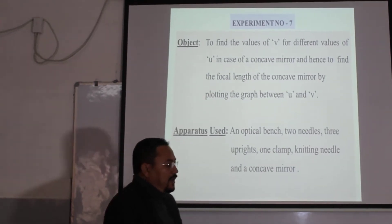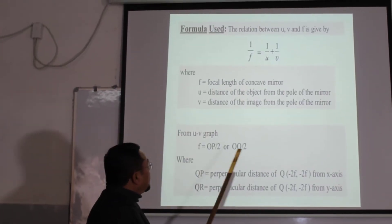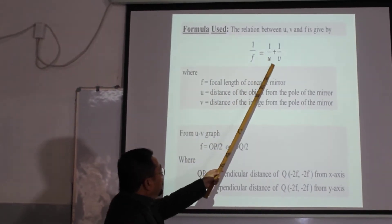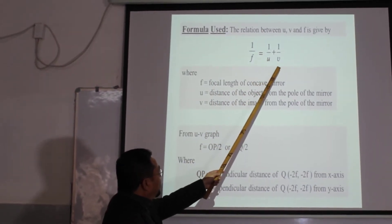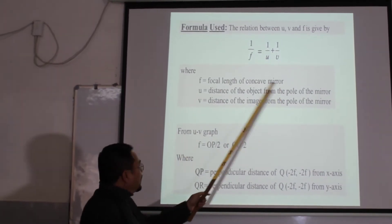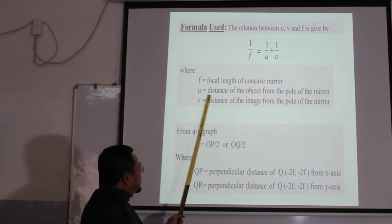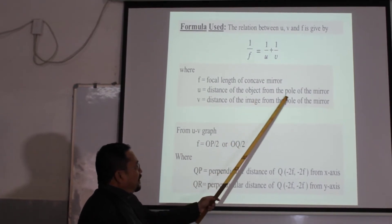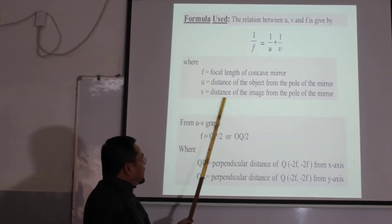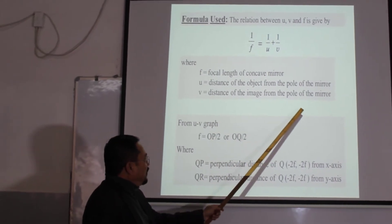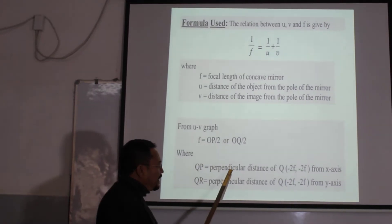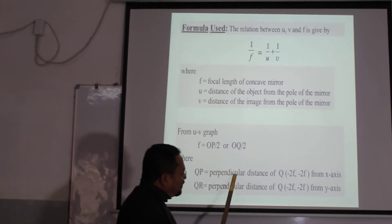The formula you are going to use for this experiment is 1/F = 1/U + 1/V. F is the focal length of the concave mirror. U is the distance of the object from the pole of the mirror, and V is the distance of the image from the pole of the mirror. How to calculate F from the graph will be explained later.